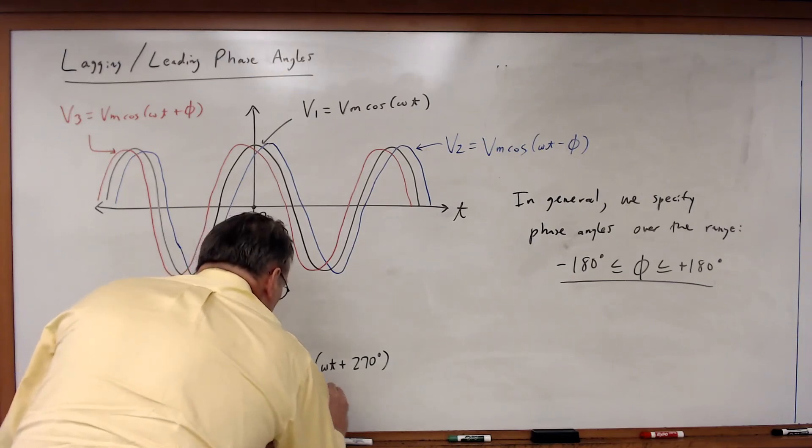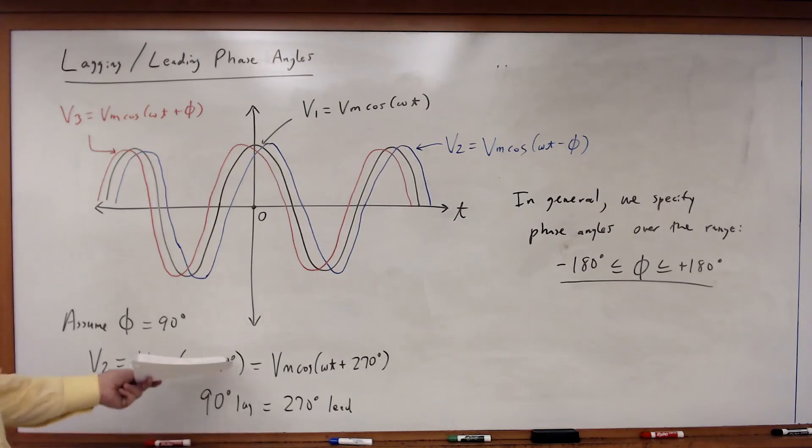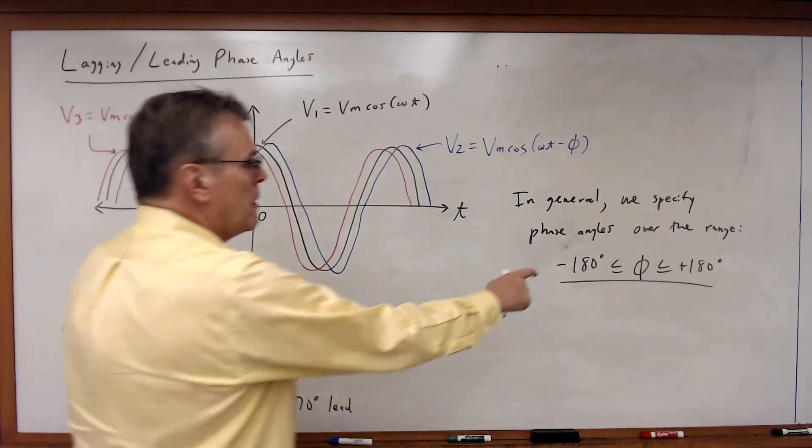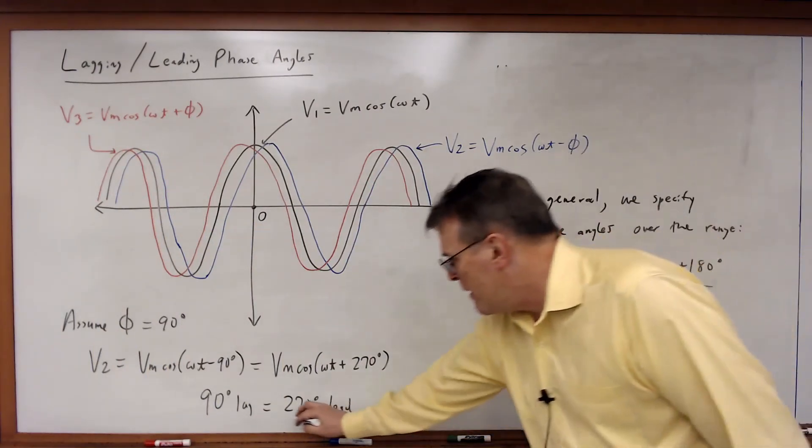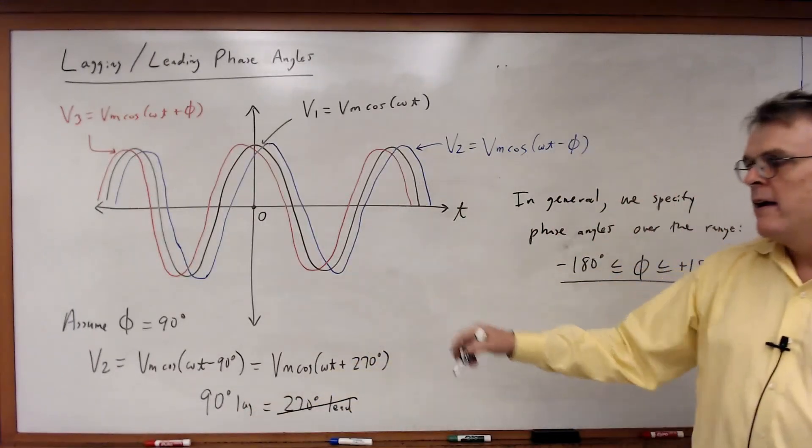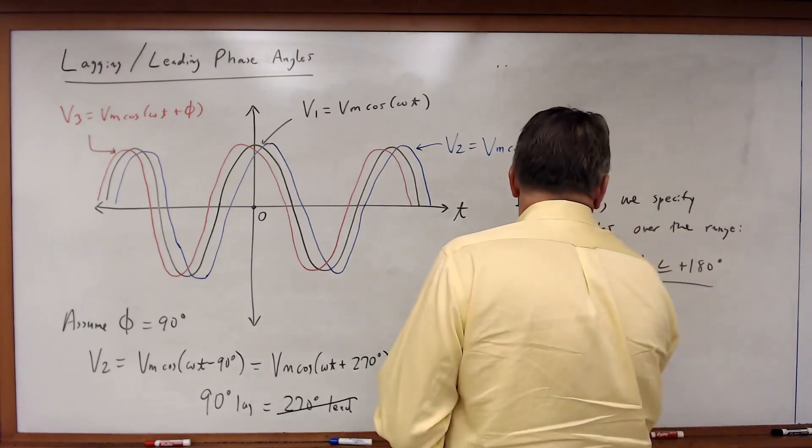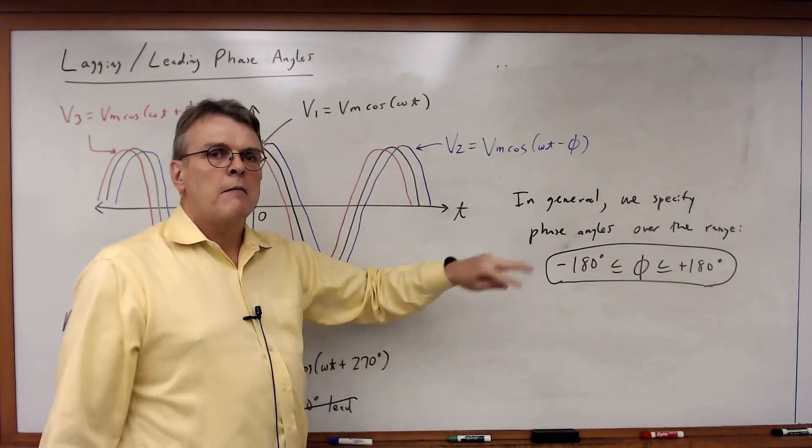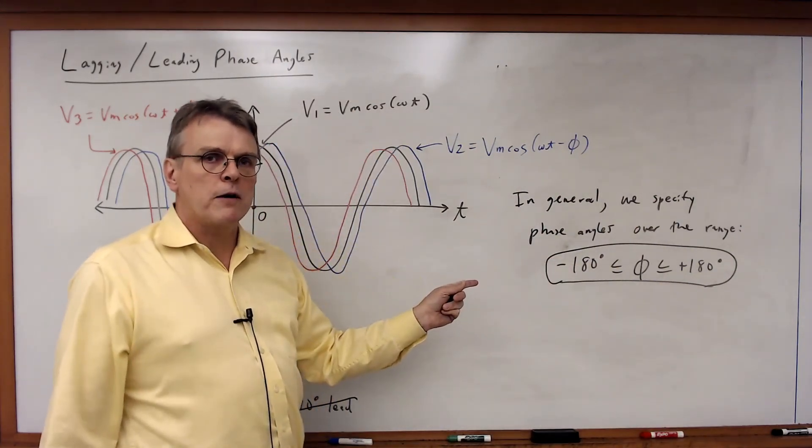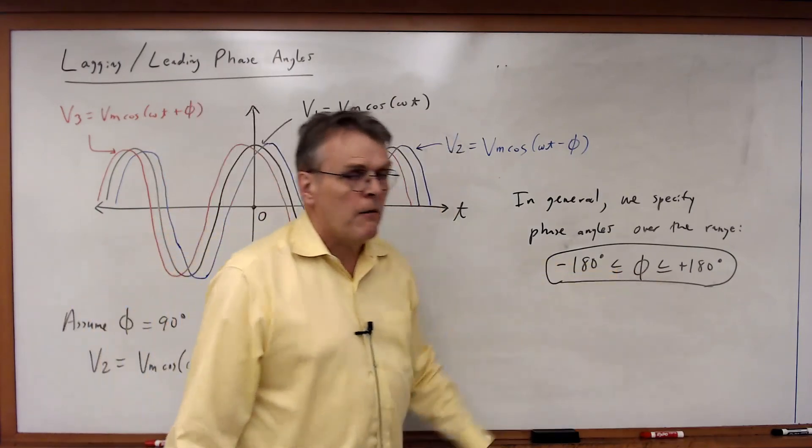So looking at this you could say, a 90 degree lag is equal to a 270 degree lead. Which do we pick when we're comparing two voltages? We'll stick with the phase angle that's in this range, plus or minus 180 degrees. So we're not going to use the 270 degree lead, we're going to use the 90 degree lag. So this is the convention you're going to be using. Anytime you see a phase angle that exceeds plus or minus 180 degrees, then you need to add or subtract 360 degrees to it to get it within the range of plus or minus 180 degrees.